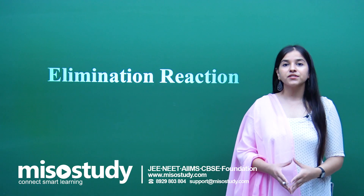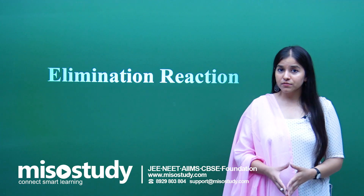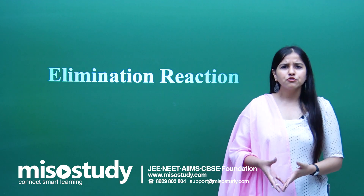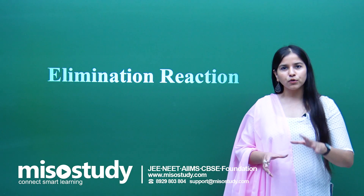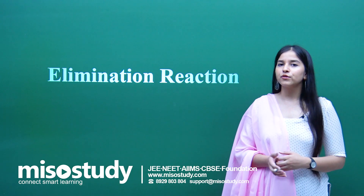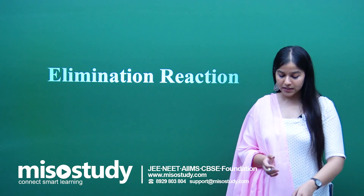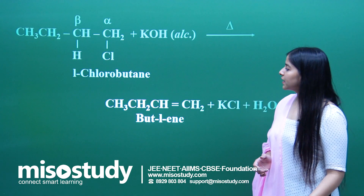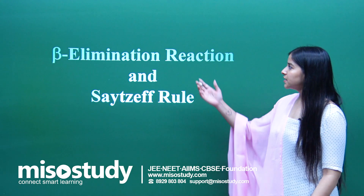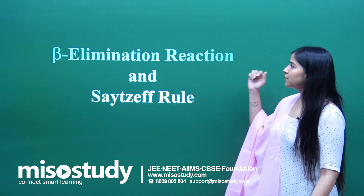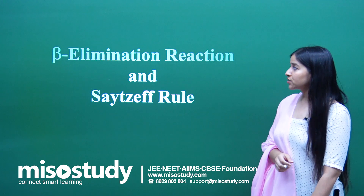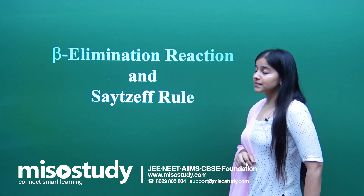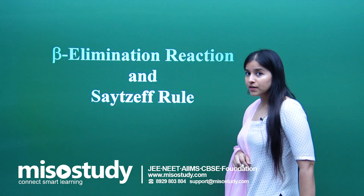Elimination reactions are of various types: alpha, beta, gamma, E1, E2, and so on. But here what I would like to focus upon is the beta elimination reactions, which occur as per the Zaitsev rule.